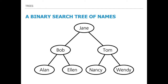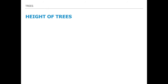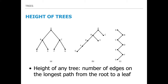In the exam, write the alphabetical order so you don't mix values. The first value in the list is always the root regardless of its alphabetical position. Then compare subsequent values based on ascending alphabetical order and place them left or right. This leads to the concept of the height of the tree — the number of edges on the longest path from the root to a leaf.